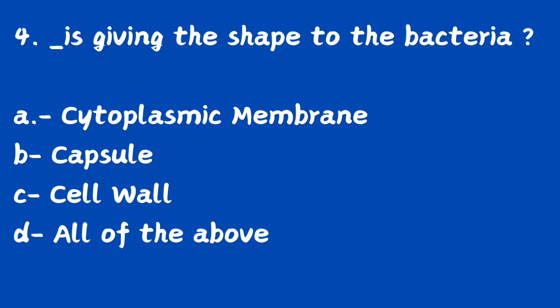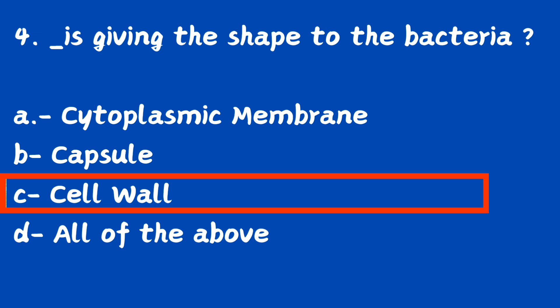Question number 4. What gives shape to the bacteria? Option A, cytoplasmic membrane; option B, capsule; option C, cell wall; option D, all of the above. The right answer is option C, cell wall. The shape of bacteria is given by the cell wall.